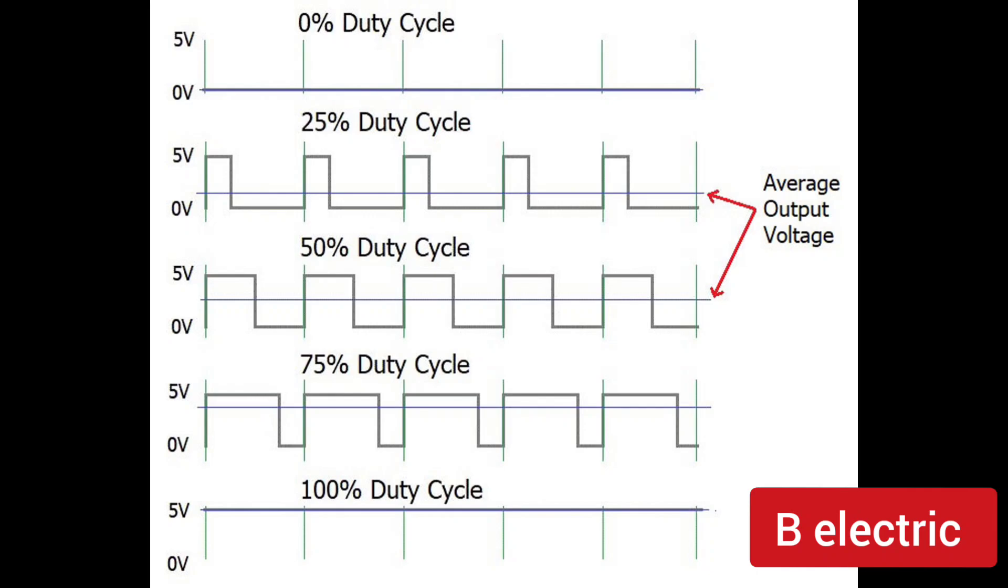After understanding the duty cycle, now the Pulse Width Modulation is controlling the duty cycle. As you see in this photo, these pulses are modulated, and this is the expected output we must see on oscilloscope.